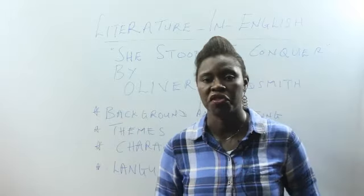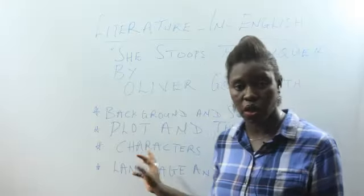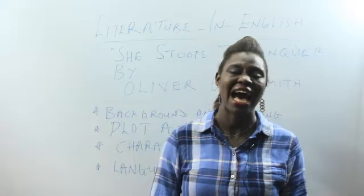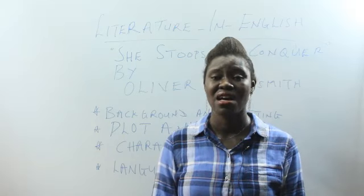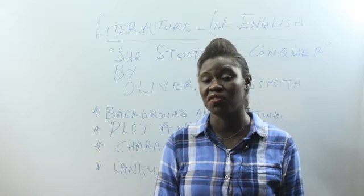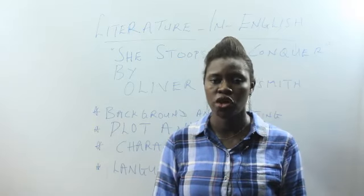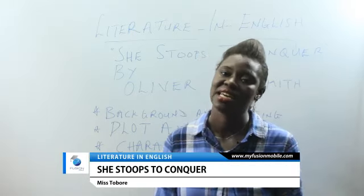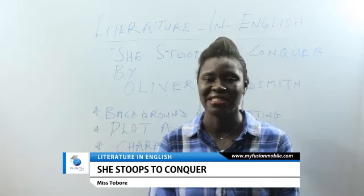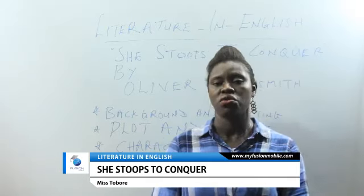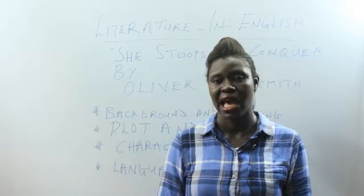A brief summary of the plot: there are the characters Mr. Hardcastle, who is a rich man. He wishes to marry off his daughter to the son of his friend, Charles Marlow. He wants to perform a fusion of the Hardcastle family and the Marlow family. It is believed that when you come from a certain class, you are to marry someone of a similarly high class.